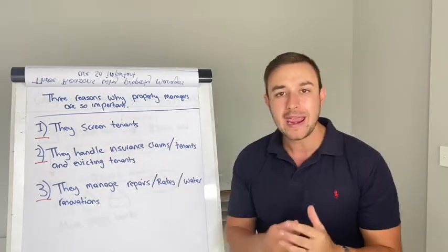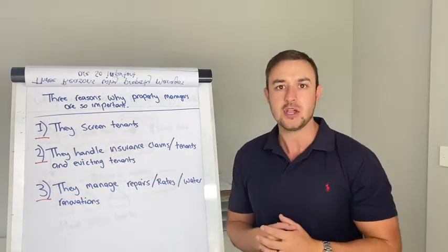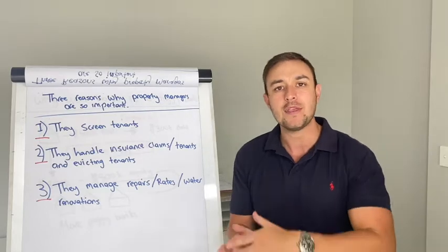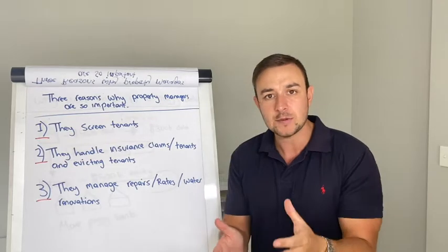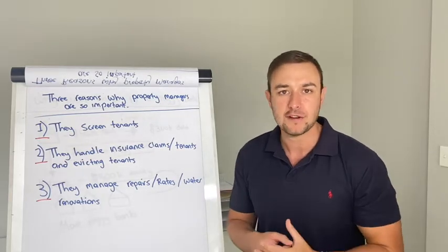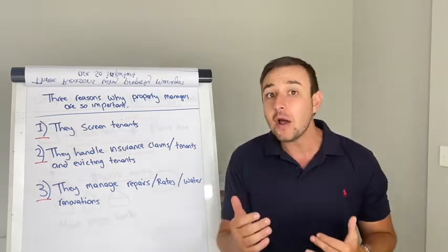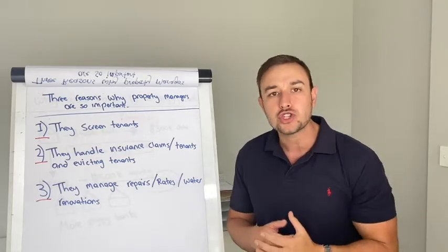Number two is they handle things like insurance claims. So if you have an insurance claim, they will go out to your property, they will check over everything, they will get the relevant tradesmen to go out there and quote how much it's going to fix, when they can fix it, and then they will even lodge your insurance claim as well.